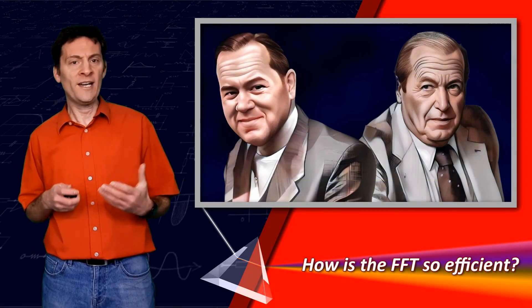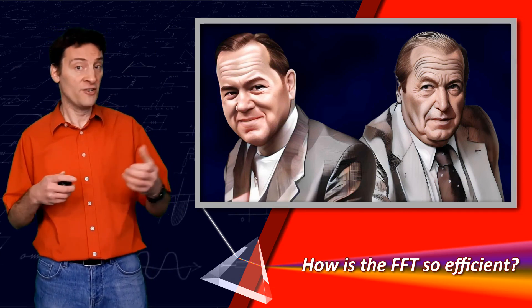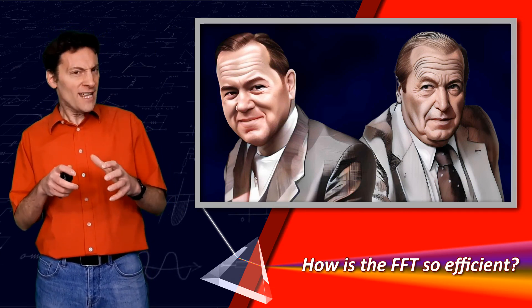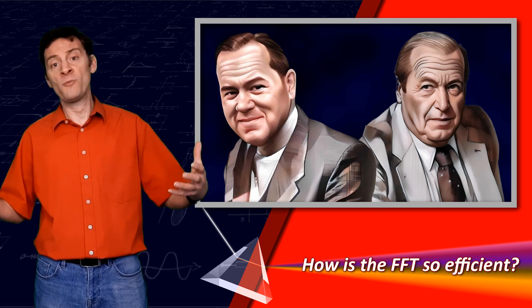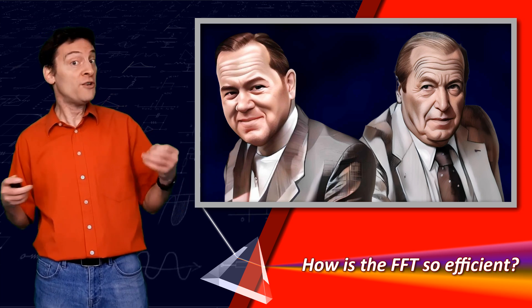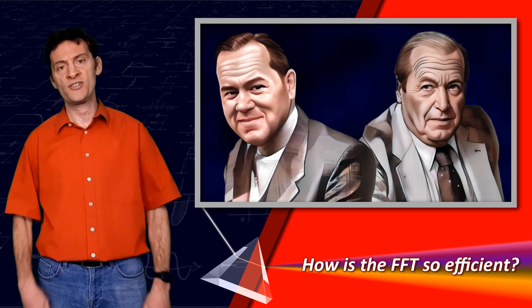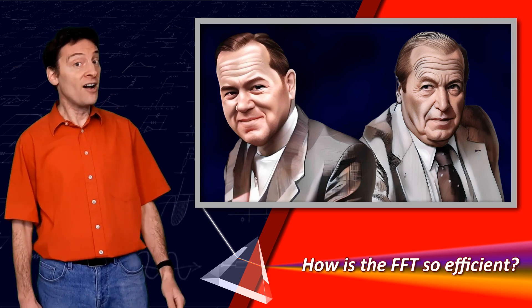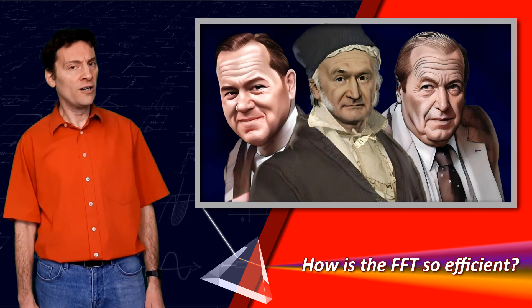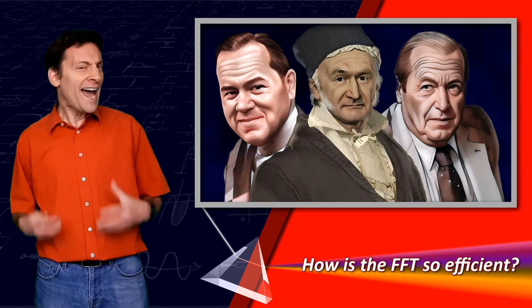So how did Cooley and Tukey exploit this repetition to make an efficient algorithm? How did they break the problem apart, perform the calculations they had to, reuse the results where they could, and stitch it all together again in one seamless solution? The answer is Gauss's divide and conquer method. But how does it work, and how did Cooley and Tukey adapt this method for the Fourier transform?